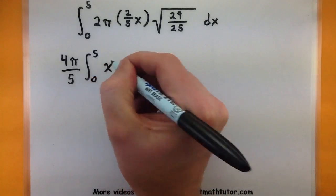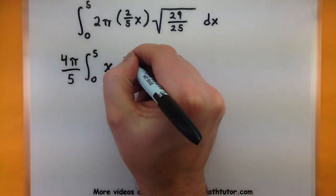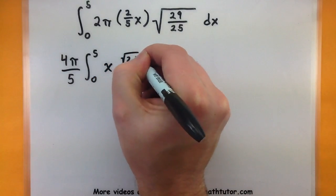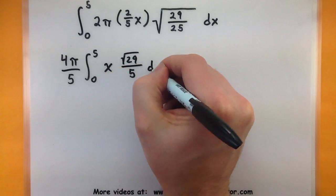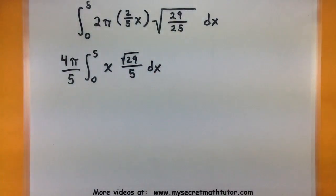Now let's see, with that square root, I could take the square root of the top and the square root of the bottom. Alright, looking good. Looks like I have another constant that I can go ahead and move out front.